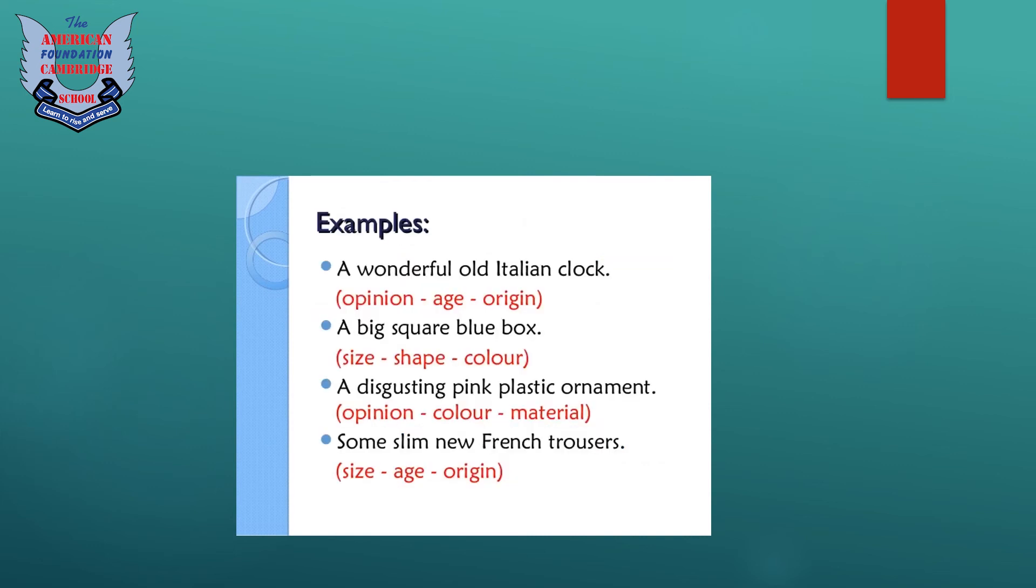Examples. Here are a few examples which can explain to you how to use the adjective orders in a sentence. A wonderful old Italian clock. Now here, wonderful is the opinion, old is the age, Italian is the origin of the noun which is clock.